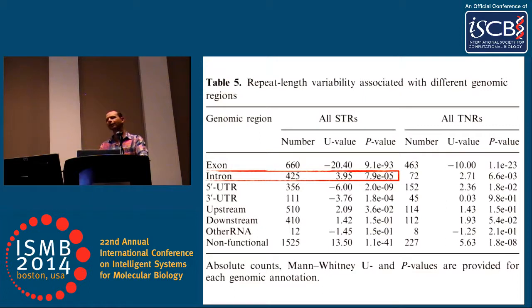Question: For Illumina sequencing, if the fragment length is shorter than the repeat length, is there no way to use this program? If the fragment length is shorter than the repeat length, which could often be the case, this method would fail to some extent. It's not going to solve all problems — when you go to longer repeats, it will fall into the same traps as single-read technologies.